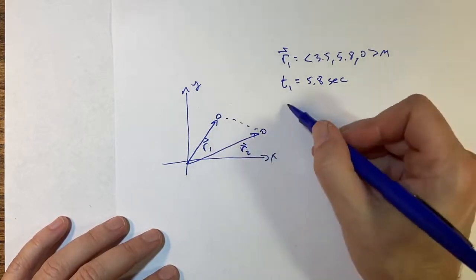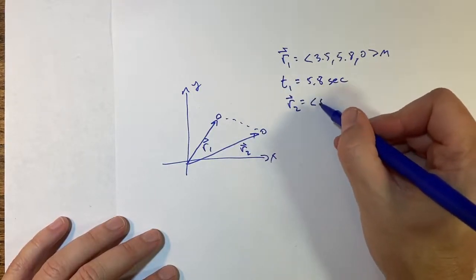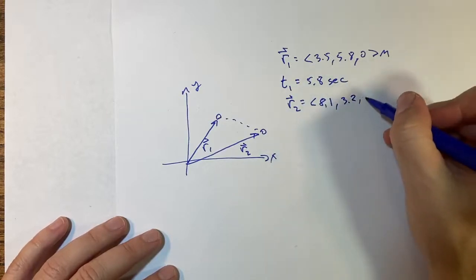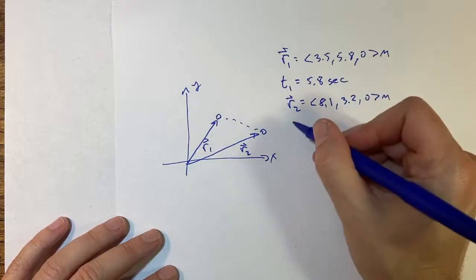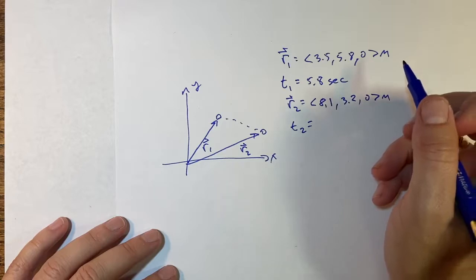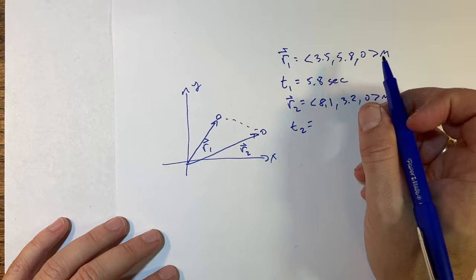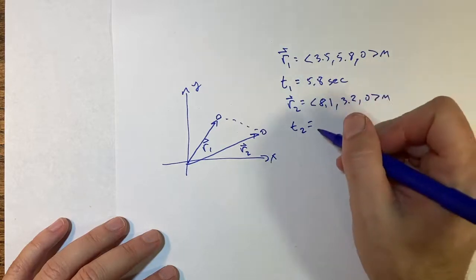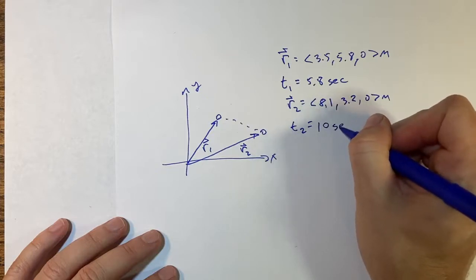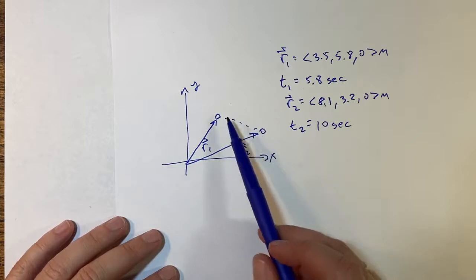And let's also say this is at a time t1 of 5.8 seconds. A little bit later the bird's over here at r2 where r2 is equal to 8.1, 3.2, 0 meters and at a time of t2. Let's see how long it take, that's like 5 meters. Let's say it's going about a meter per second so I'm going to say a time of 10 seconds.